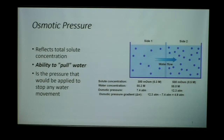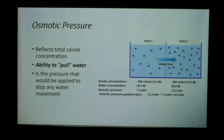Water is moving from side one to side two, and the area with higher osmotic pressure — 12.3 atmospheres — is doing the pulling. Those particles have an overpowering force bringing water from side one to side two. The take-home message is that the movement of water happens opposite the direction of the osmotic pressure gradient.